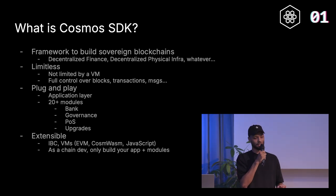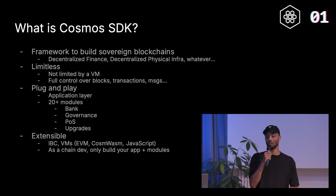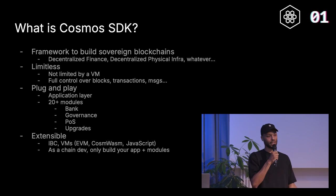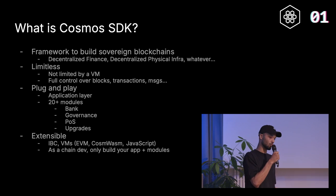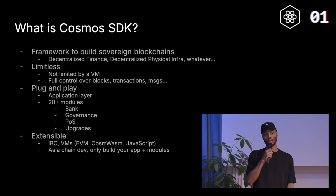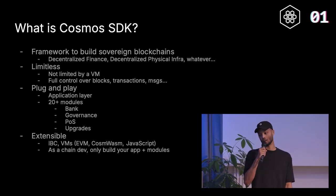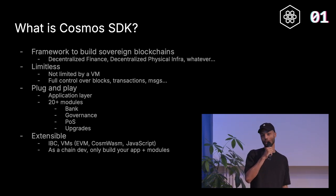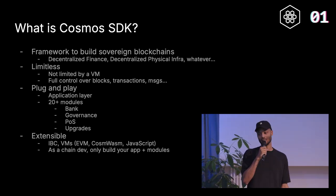You already have in the Cosmos SDK a governance module that allows you to submit proposals, a bank module for sending and receiving tokens, and proof-of-stake capabilities with the staking, evidence, and slashing modules. These let you not worry about validator implementation. The Cosmos SDK also has a module to handle upgrades. There are over 20 modules provided by the Cosmos SDK, and many more from IBC, Cosmwasm, and others — that's why it is extensible.